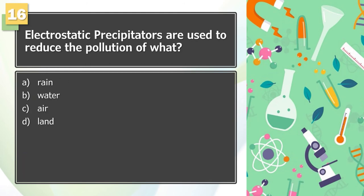Number 16: Electrostatic precipitators are used to reduce the pollution of what? A. Rain, B. Water, C. Air, D. Land.